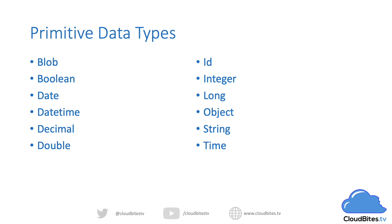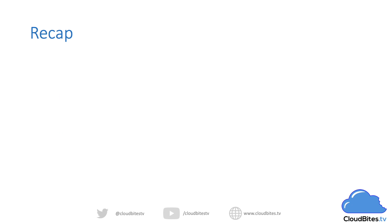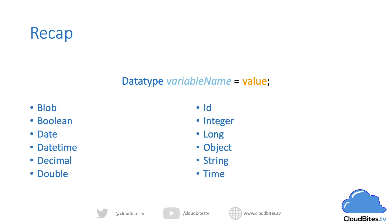We can assign any of our variables one of those data types to work with. To recap how we define variables: first, we have the data type, because Apex is a strongly typed language; we have the name of the variable; then we have the value we're assigning to it; and we always finish with a semicolon. We also looked through the primitive data types — blobs, booleans, and so on. These are the data types that Salesforce provides out of the box that we can use to assign to our variables and cover most data we'll be working with. Hope you found this useful — thank you for watching. If you'd like to keep up with this series, remember to hit subscribe. I look forward to seeing you on the next video.